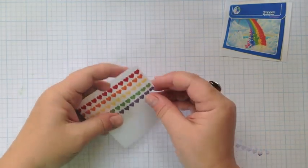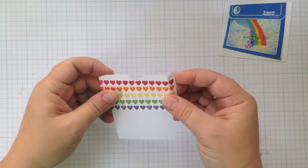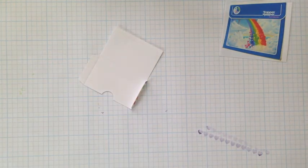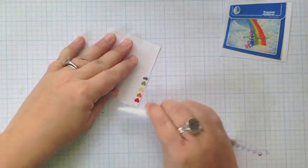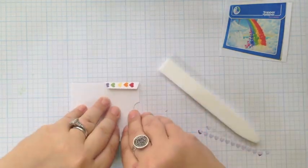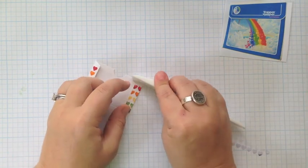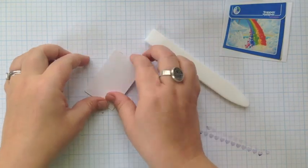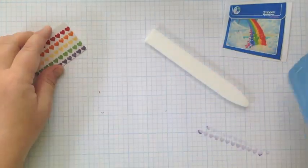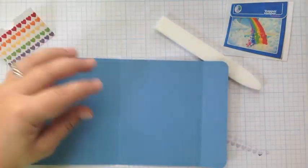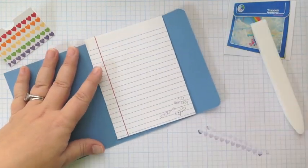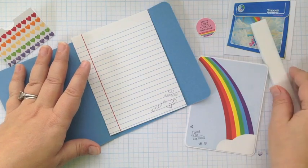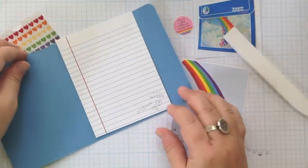All right, so now we have all of our pieces. We've got the pocket which we can flatten. Fold and flatten. We have our card base. We have our inside panel. Outside panel and our little sticker detail. So let's put it all together.